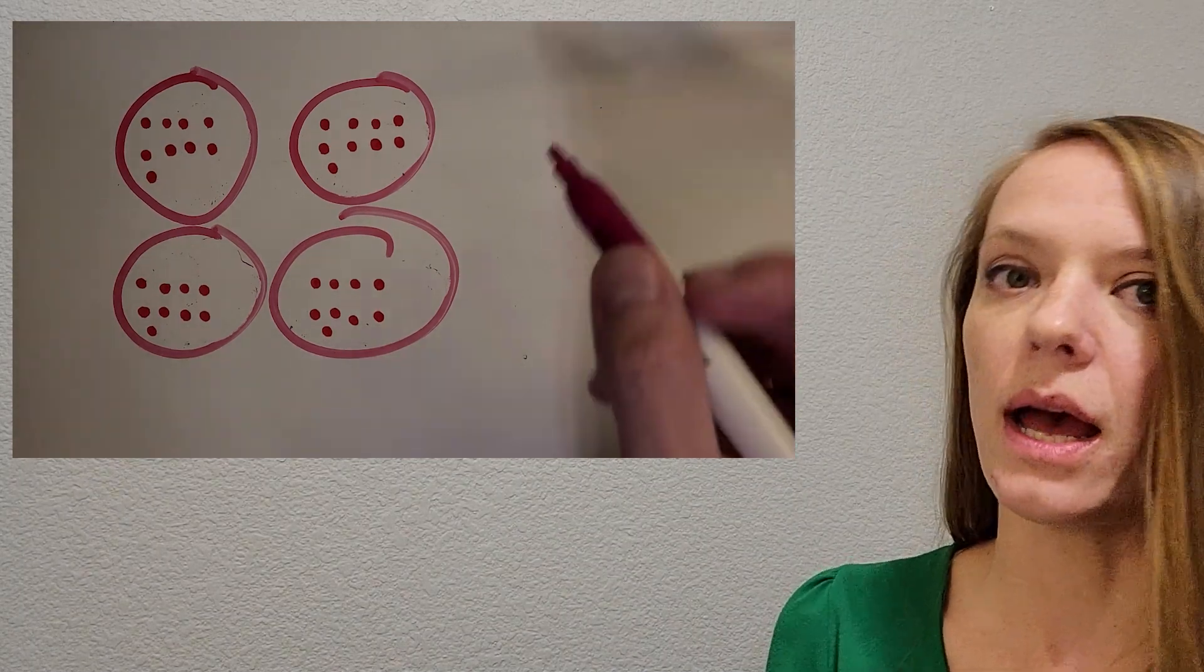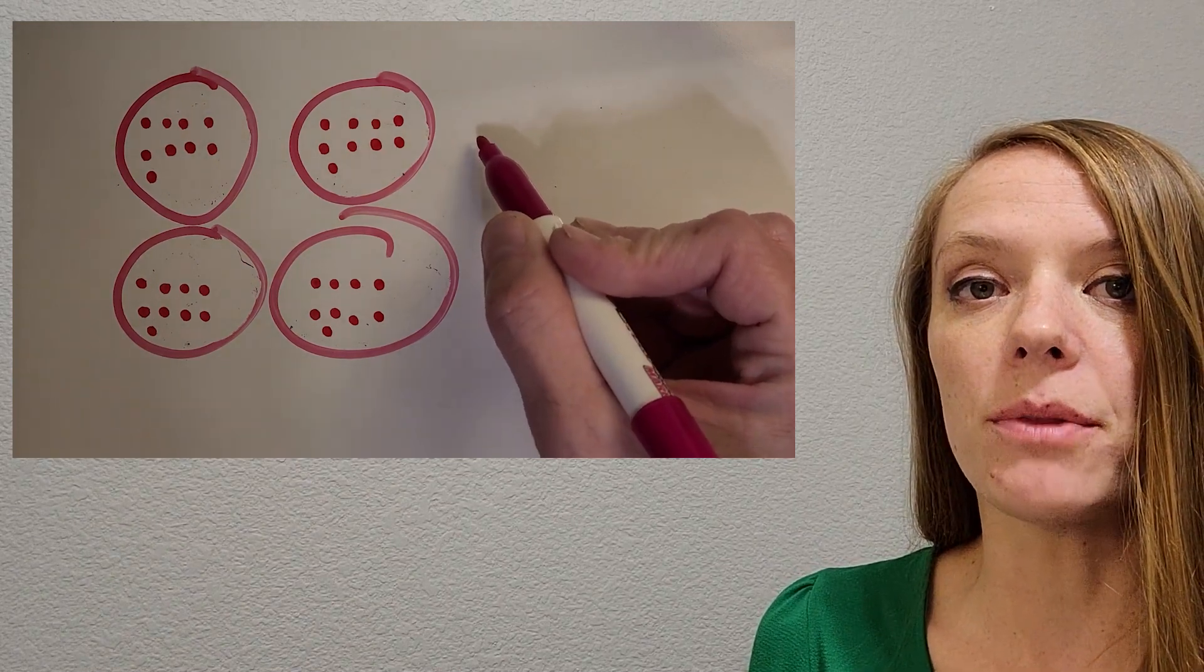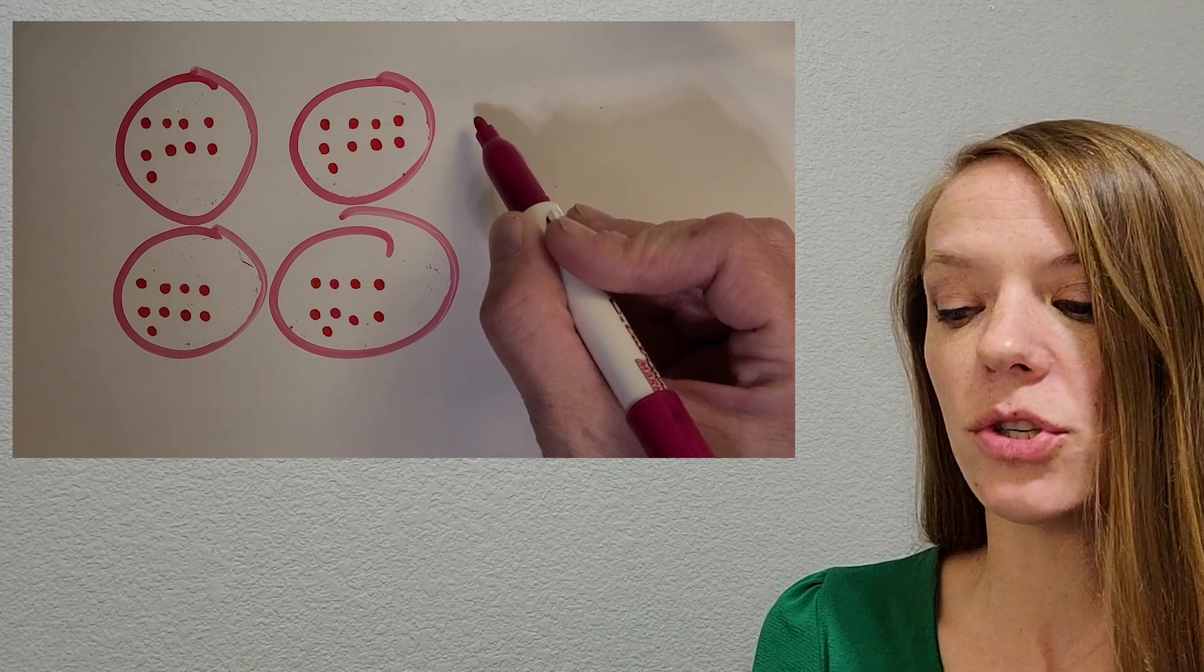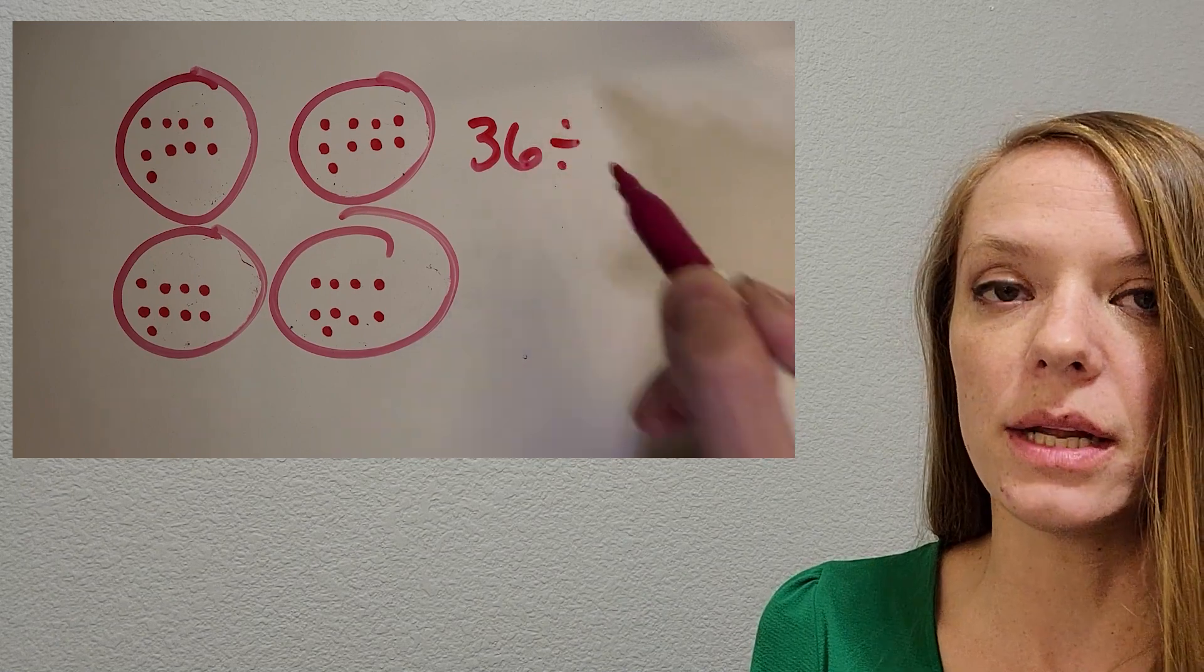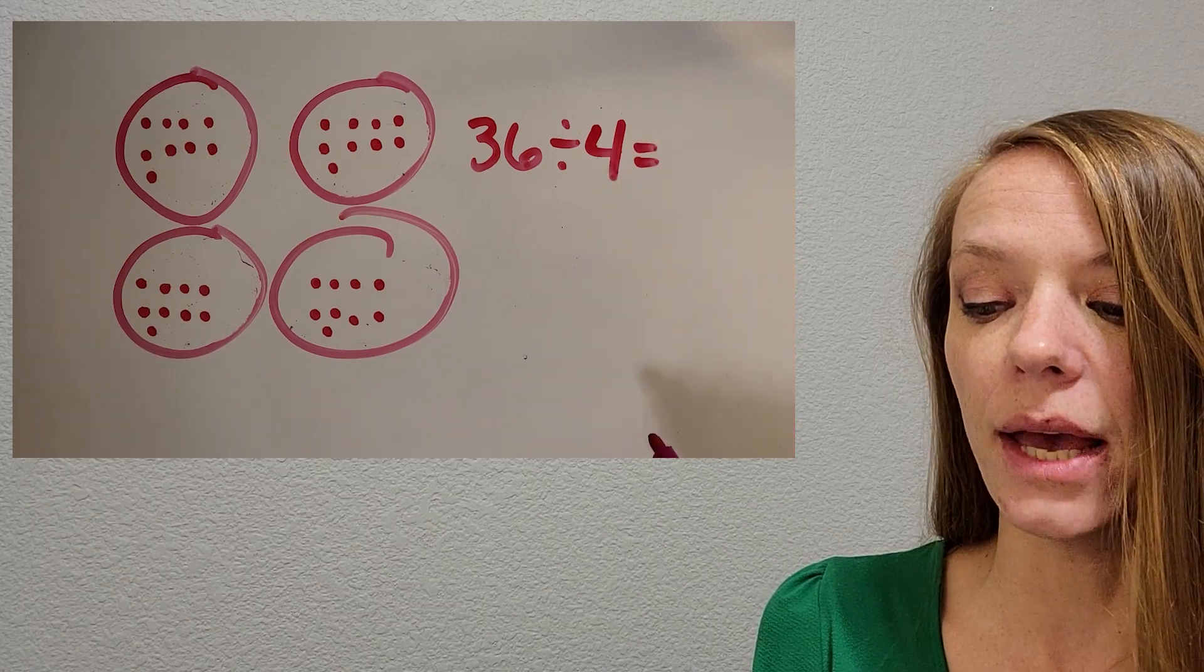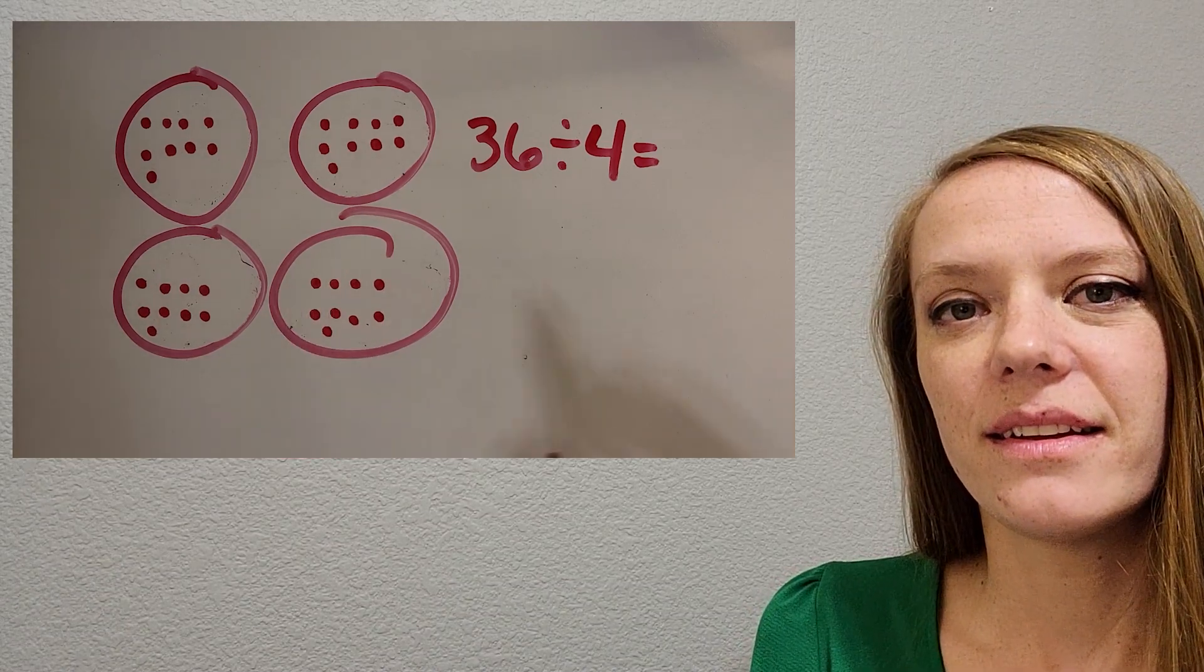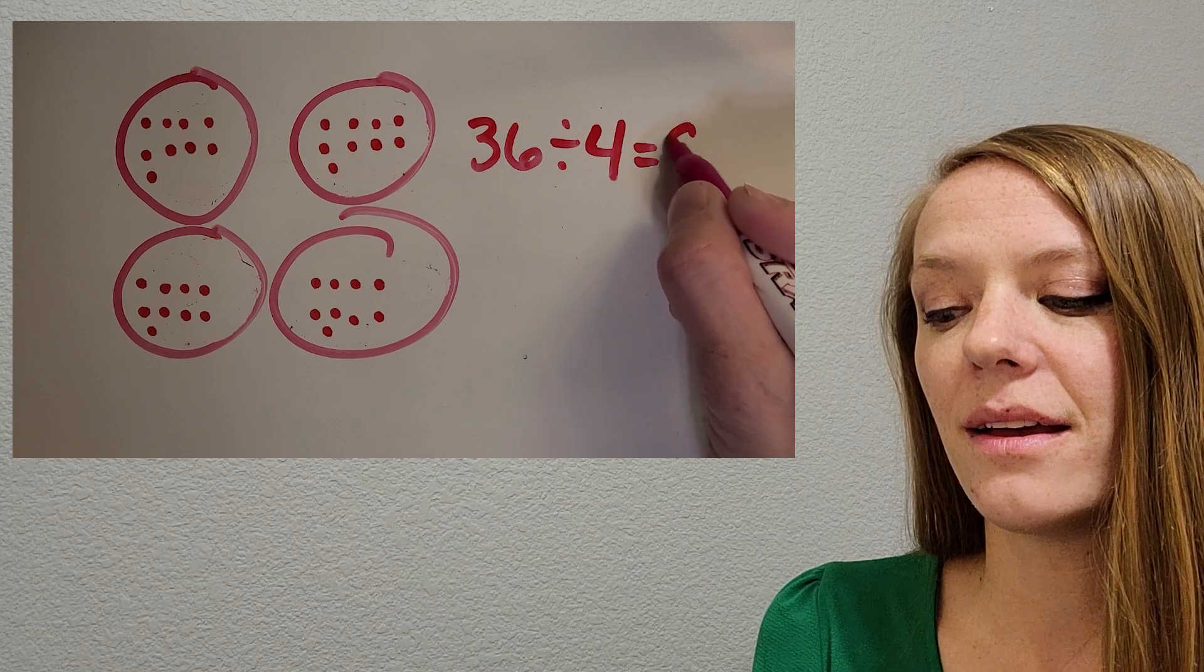And now I can write down what problem I just did. So what do you think? Now that we've done a couple problems, what division problem do you think I just solved? Okay, you might be thinking, well, you started with 36 total, and we divided it or separated it by four because we had four friends. And then now we just need to count up each group to find the answer. What did each group get? Okay, you got it. It takes a little longer to count all those dots, but it's nine. Great job.